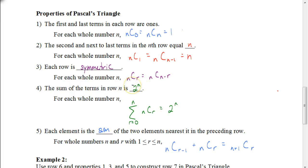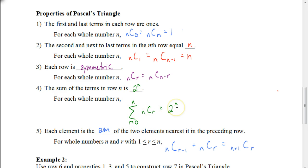Property 4: the sum of each row is 2 to the nth power. By the way, if you're using the NCTM FST textbook, there's a typo — it says 2 times n, but it's supposed to be 2 to the nth power. Using summation and combination notation, this describes the sum of each number in each row equaling 2 to the nth power. Property 5: each element is the sum of the two elements nearest it in the preceding row — you just add the two numbers above it to find the next term.